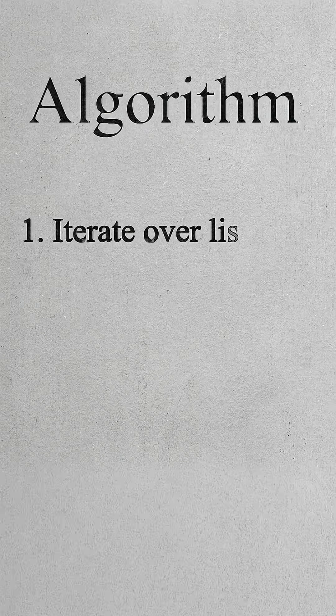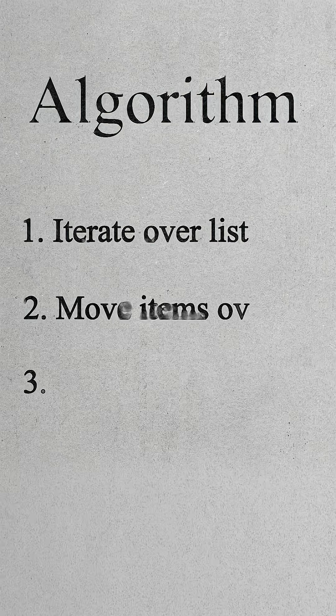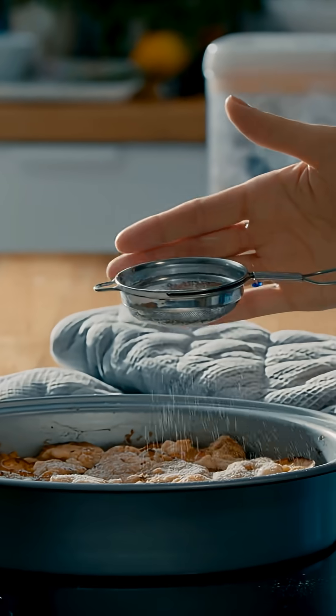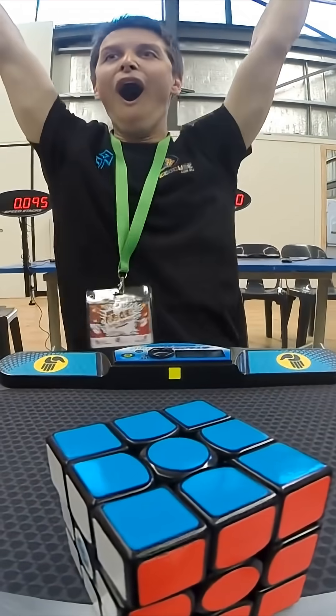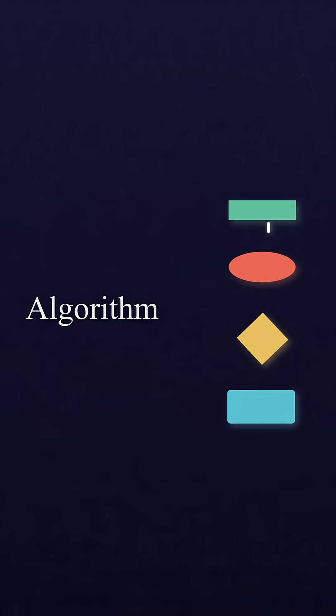An algorithm is just a good set of instructions. If you've ever assembled IKEA furniture, baked a cake, or solved a Rubik's cube, you've used an algorithm.